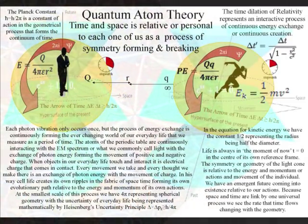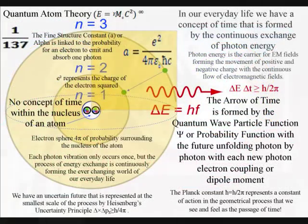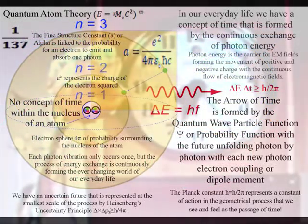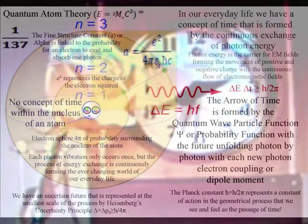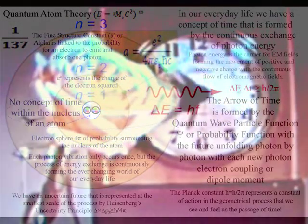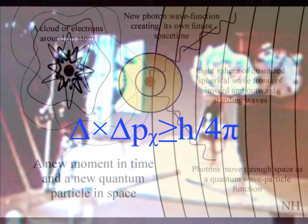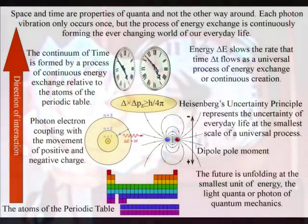At the smallest scale of the process, this energy is represented by the spontaneous absorption and emission of photon energy relative to the atoms of the periodic table. It is this process of energy exchange that forms the ever-changing world of our everyday life that we see and feel as a period of time.